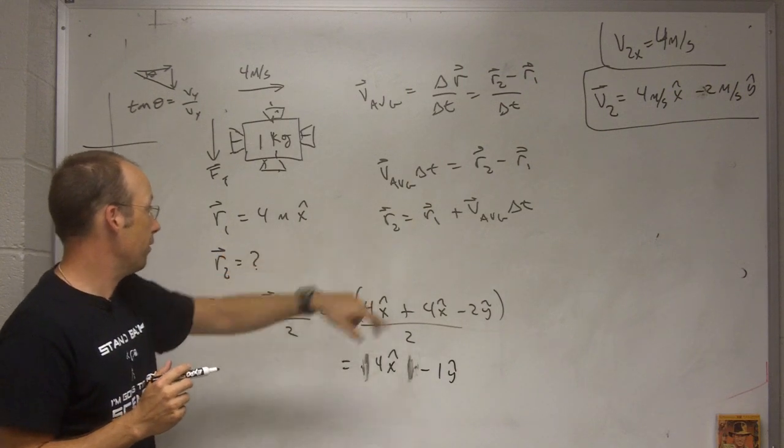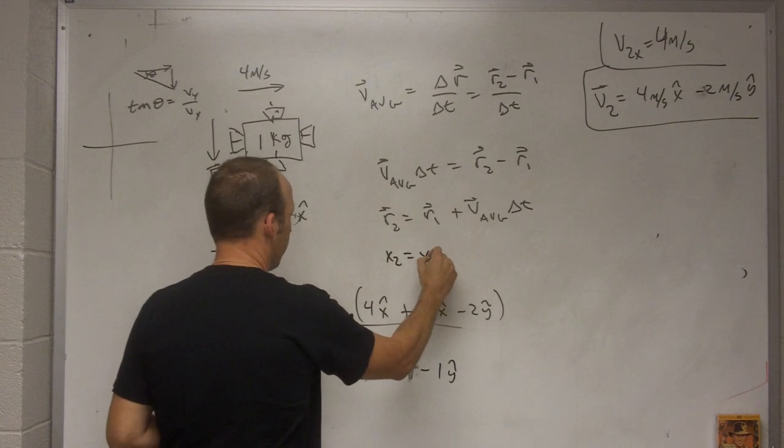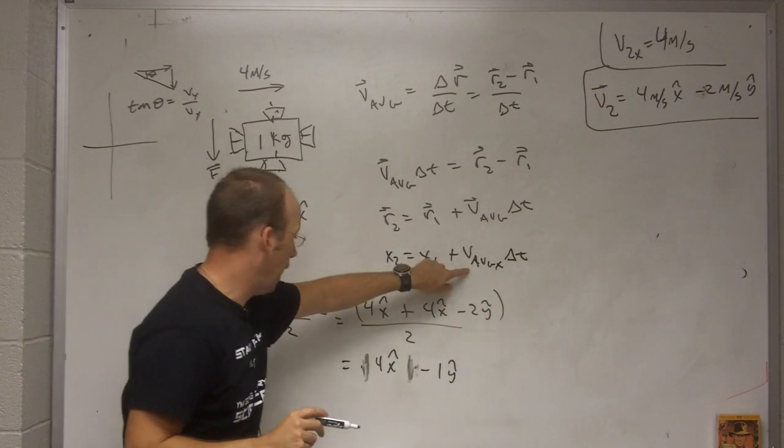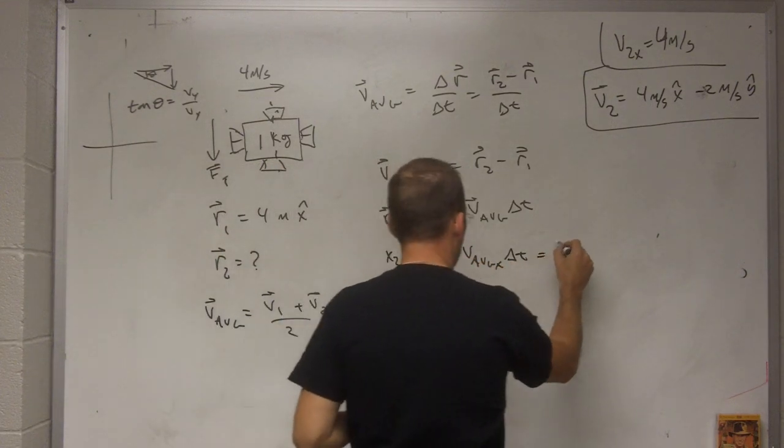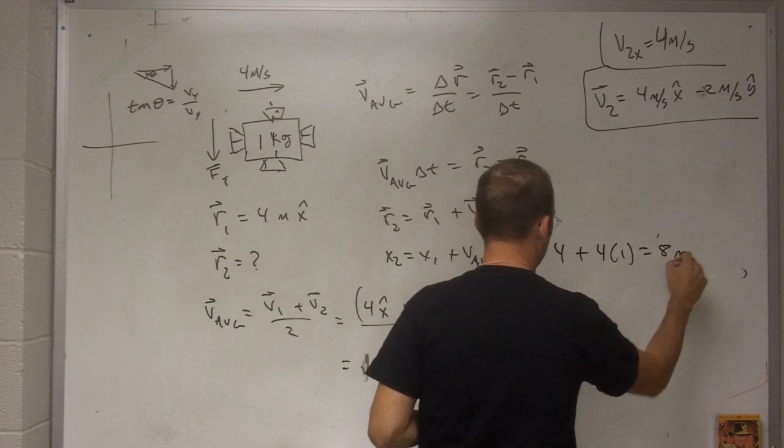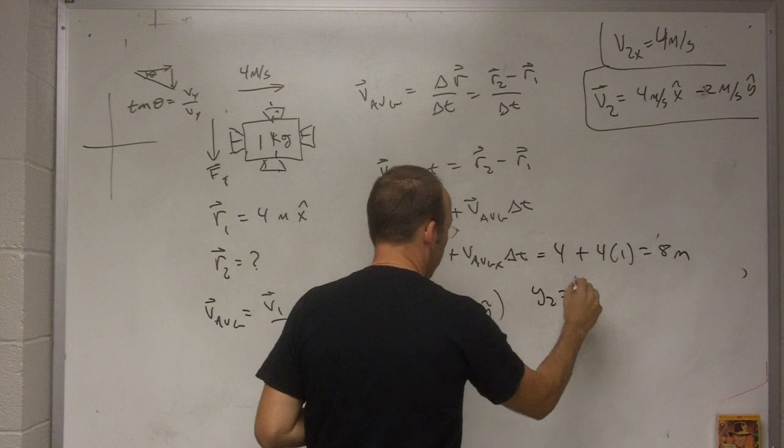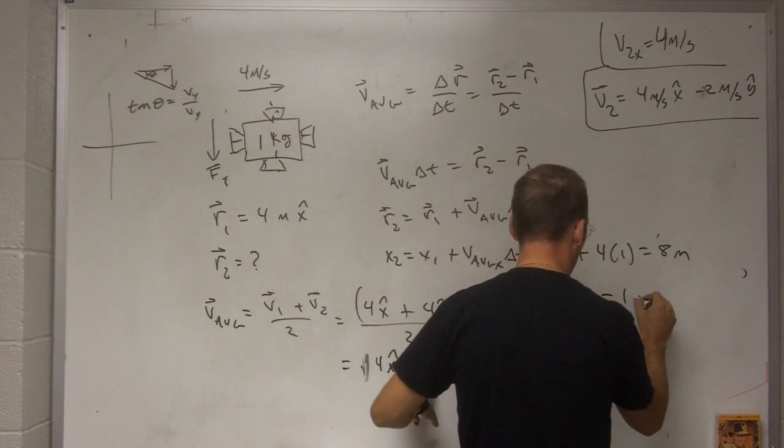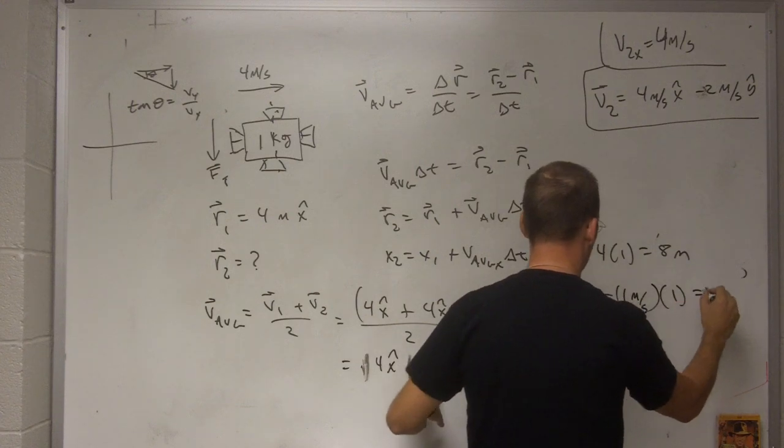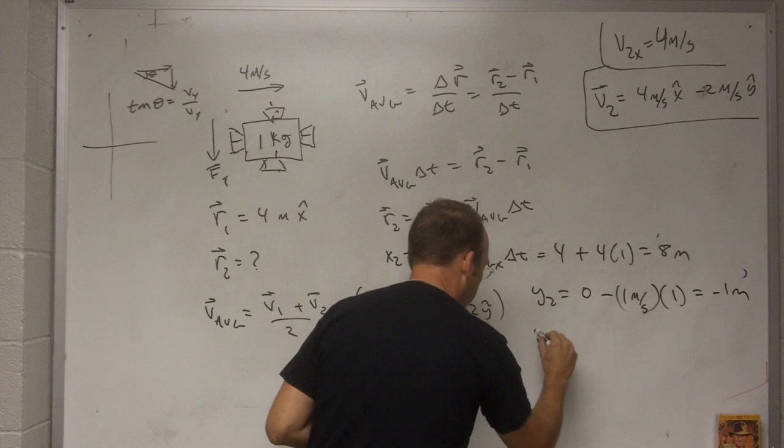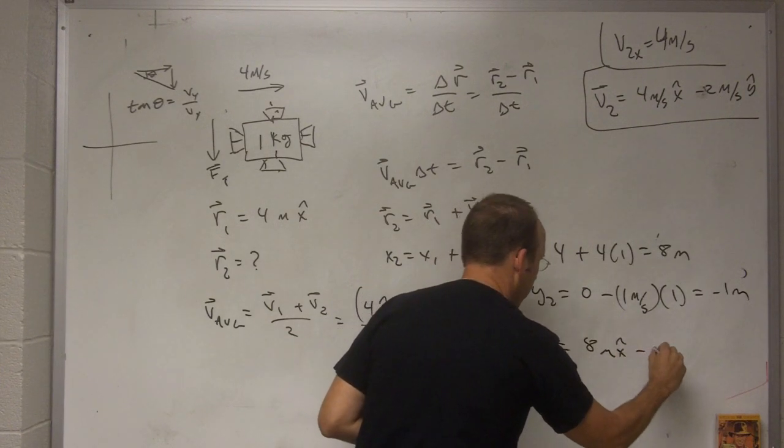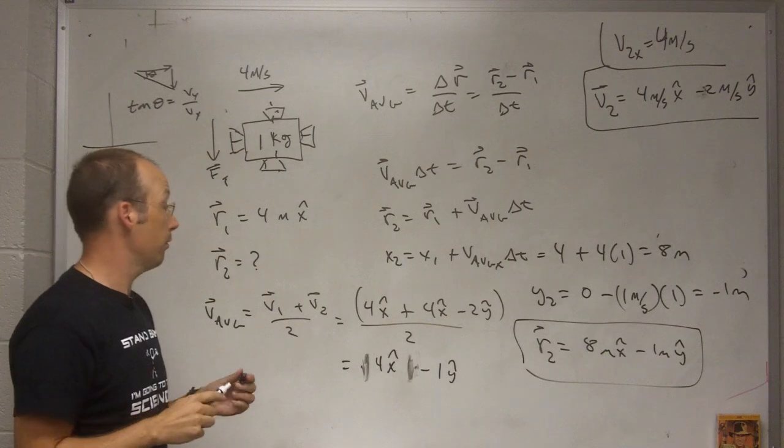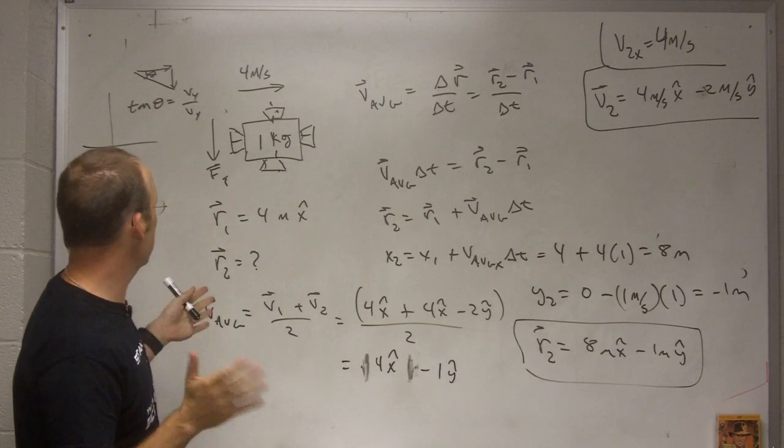So now I can write this as x and y directions. x2 equals x1 plus the average x velocity delta t. So x1 is 4, average x velocity is 4, and that's 1 second. So this is going to be 4 plus 4 times 1 equals 8 meters. And then I can do the same thing. y2 equals y1, which was 0, minus the average velocity of 1 meter per second times 1 second. It's going to give me negative 1 meter. So the final position r2 is going to be 8 meters x hat minus 1 meter y hat. So now I know how fast it's going and I know where it is after that thrust. A little more complicated situation because it's two dimensional.